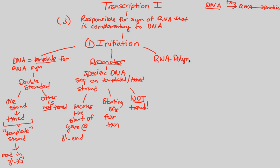RNA polymerase — written as RNA-POL — is an enzyme we've seen referenced in DNA synthesis. Importantly, RNA polymerase does not need a primer to get started, unlike DNA polymerase which requires an RNA primer. All RNA polymerase needs is a promoter — a region of DNA that signals it to come and transcribe what's next.